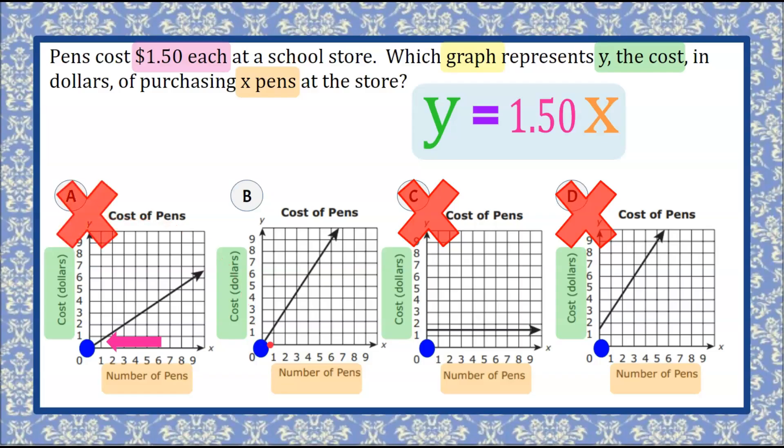So I can eliminate graph A because this is less than a dollar to buy one pen. I can identify that our best graph here shows one pen costs approximately $1.50. That's what it looks like on the line. Graph B out of these four graphs represents this real-world situation.